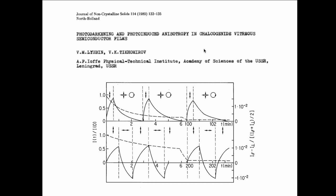Another effect is reversible photo-induced anisotropy. When a sample is illuminated with linearly polarized light, anisotropy is created. This anisotropy can be erased by switching to circular or non-polarized light, then re-induced — or reversed by rotating the polarization to the orthogonal direction.